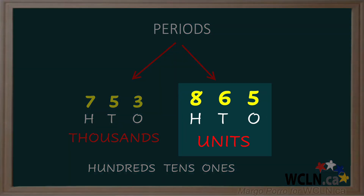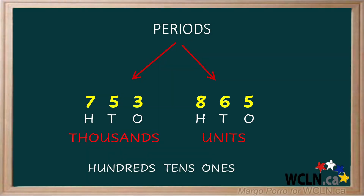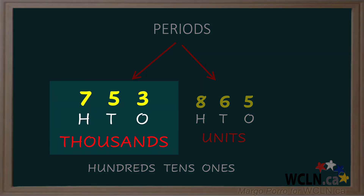The ones, tens, and hundreds in the units period are the ones you're most familiar with. In the thousands period, the one thousands are often called just thousands.